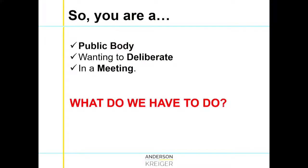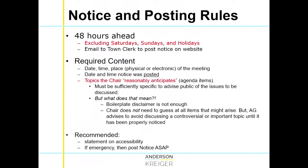Now we're into the life cycle of a meeting. You are a public body, you want to deliberate properly. First, you publish an appropriate notice — at least 48 hours ahead, excluding non-business days. You must publish the agenda and notice for the upcoming meeting. If you want to meet on Monday at 6 PM, the notice has to be out by Thursday at 6 PM. Once you have the notice, send it to the town clerk who will publish it on the website. The town clerk's office will review content and make sure you've got a proper notice.